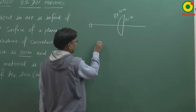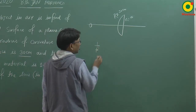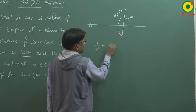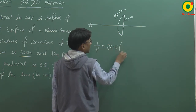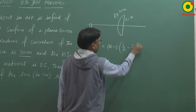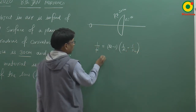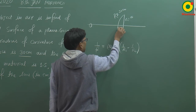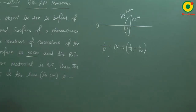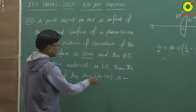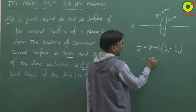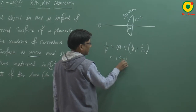तो इसका focal length निकालना है. तो lens maker का formula apply करेंगे: 1/f = (μ - 1)(1/R1 - 1/R2). इस material का refractive index दिया गया है 1.5. तो रखेंगे 1.5 minus 1.